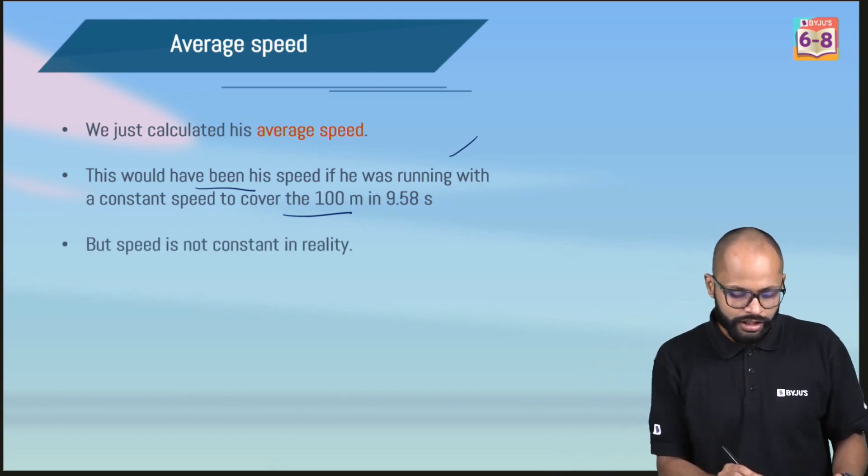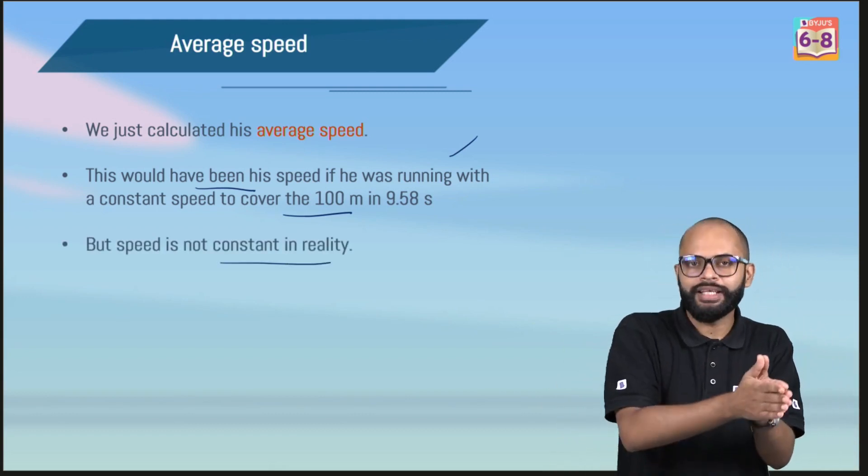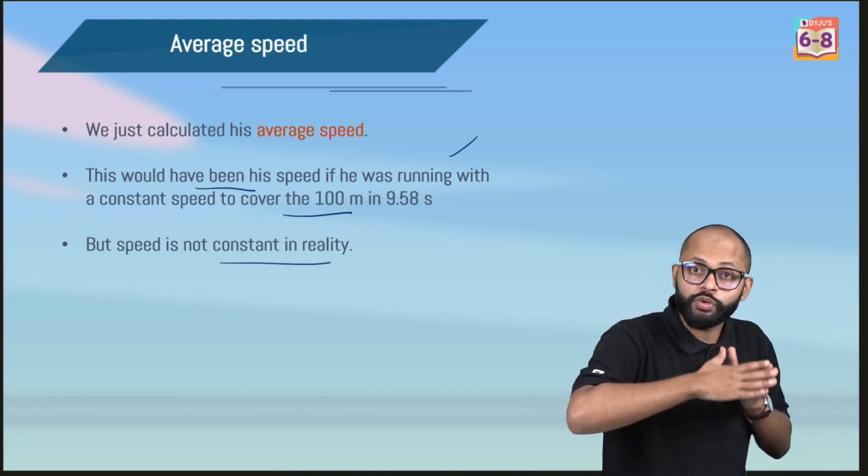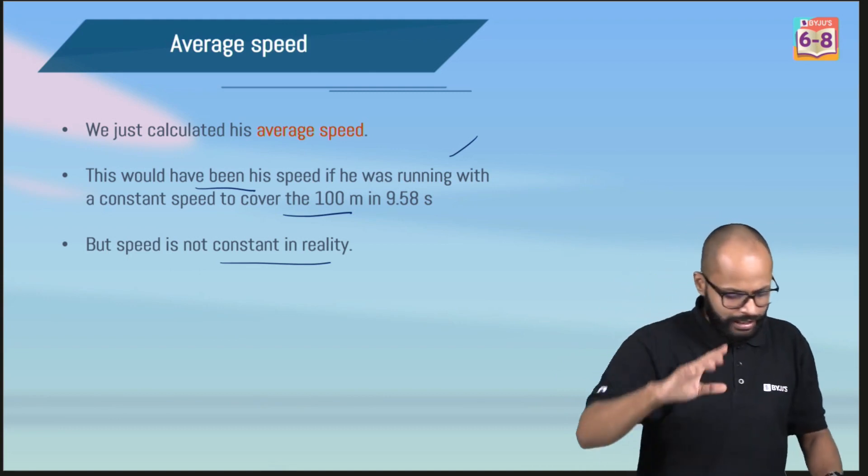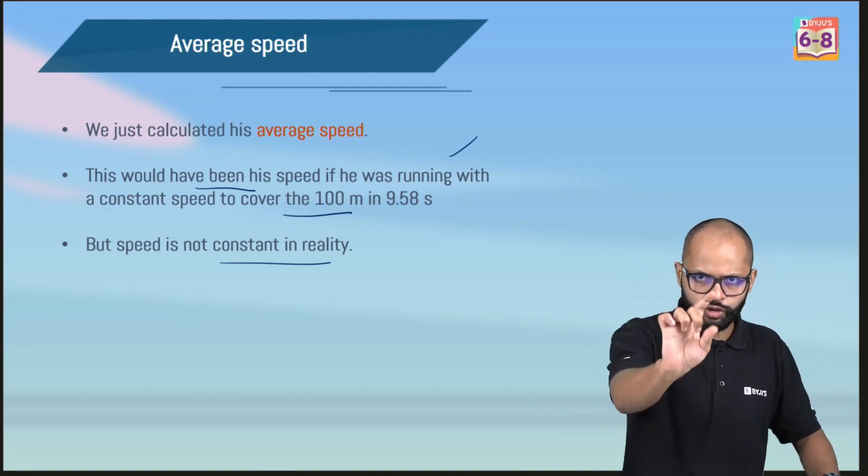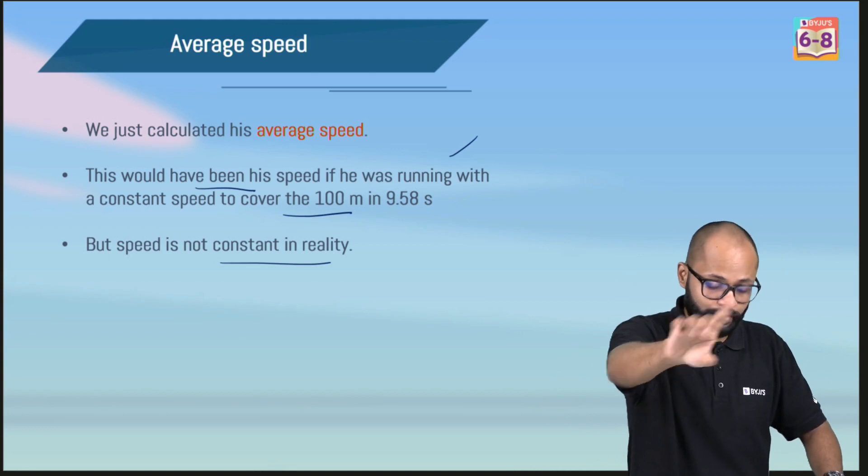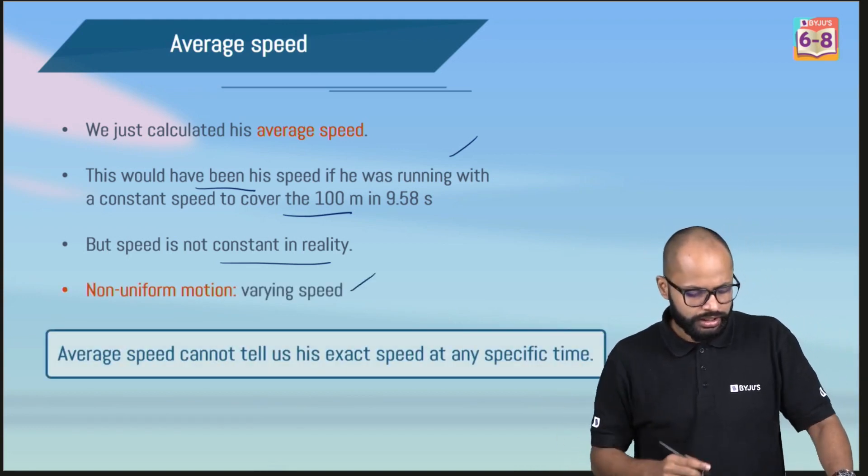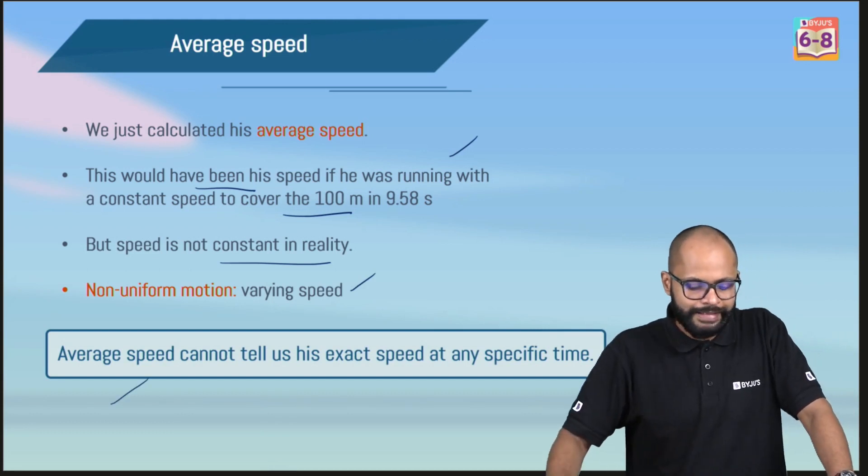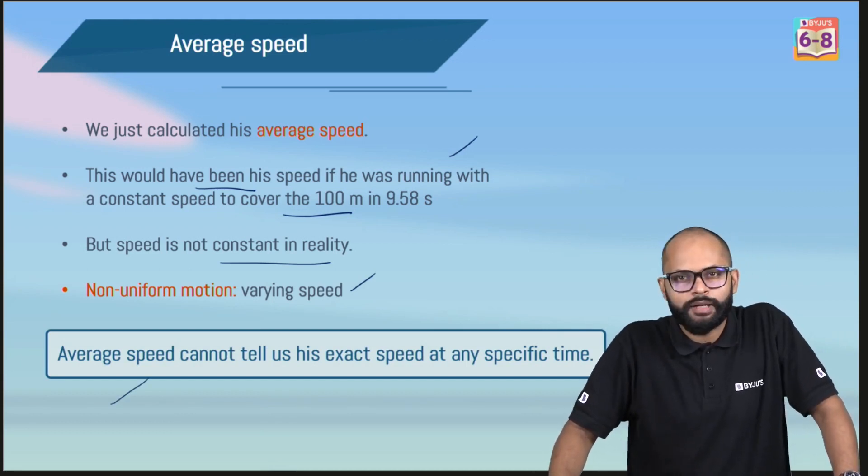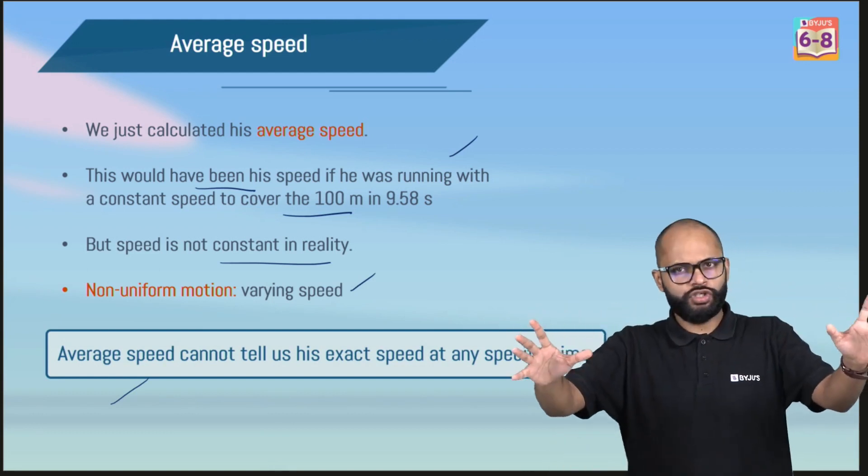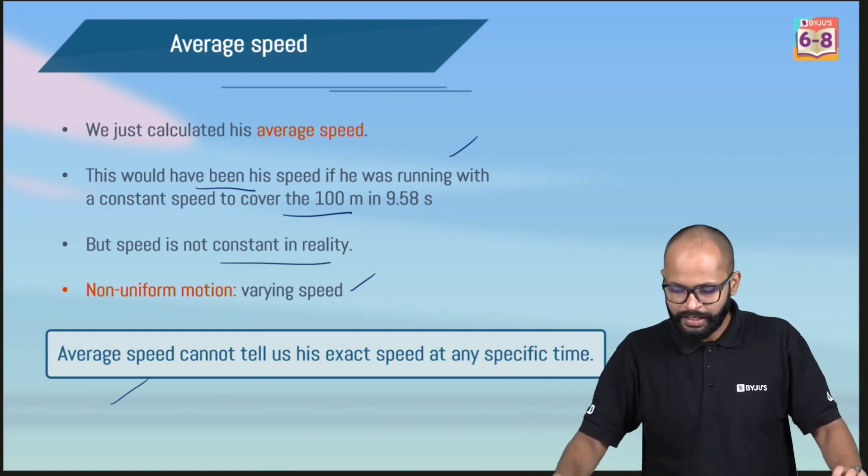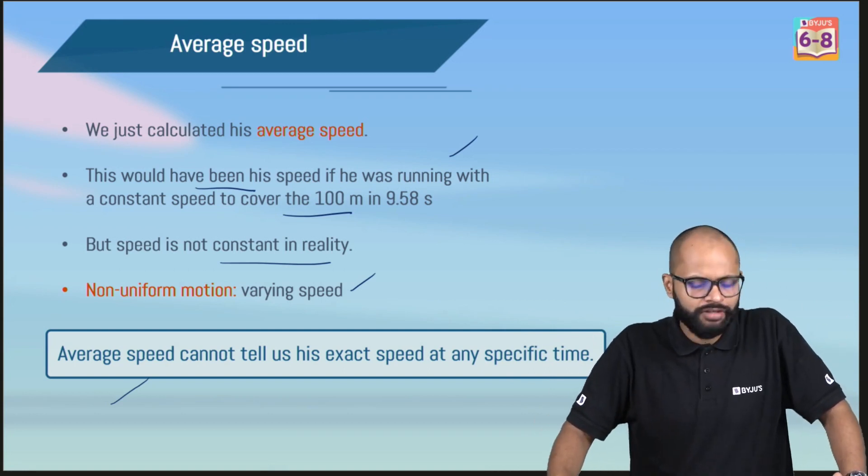But we know this is not constant in reality because an athlete, they start from rest. It was zero in the starting. They had to accelerate first, reach at a speed. That's why we understand it's a non-uniform motion that Usain Bolt was running with. Varying speed motion is what we call as a non-uniform motion. So average speed cannot tell us his exact speed at any specific time. It's more like an average, a way of telling he covered 100 meters at the speed of 37.54. This is average speed.